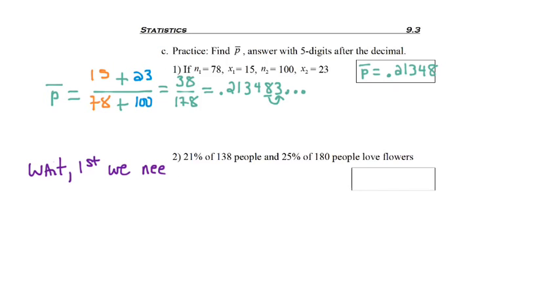But wait! First, we're going to need to find X1 and X2. We weren't provided that information like we were in the problem above, but we have the tools to find that. X1 is the population percent times the population or the amount of the population.